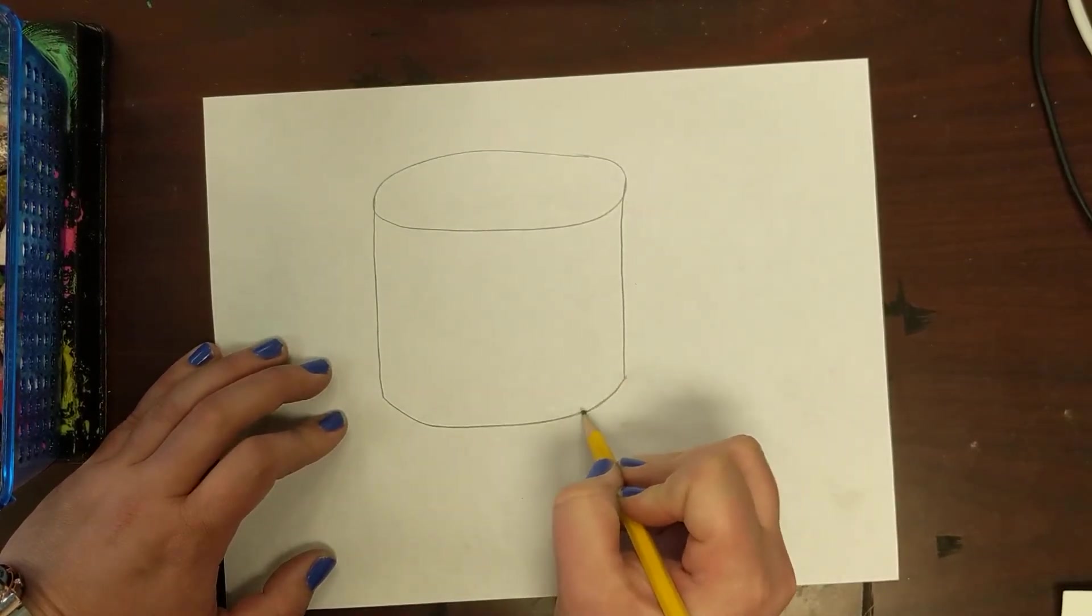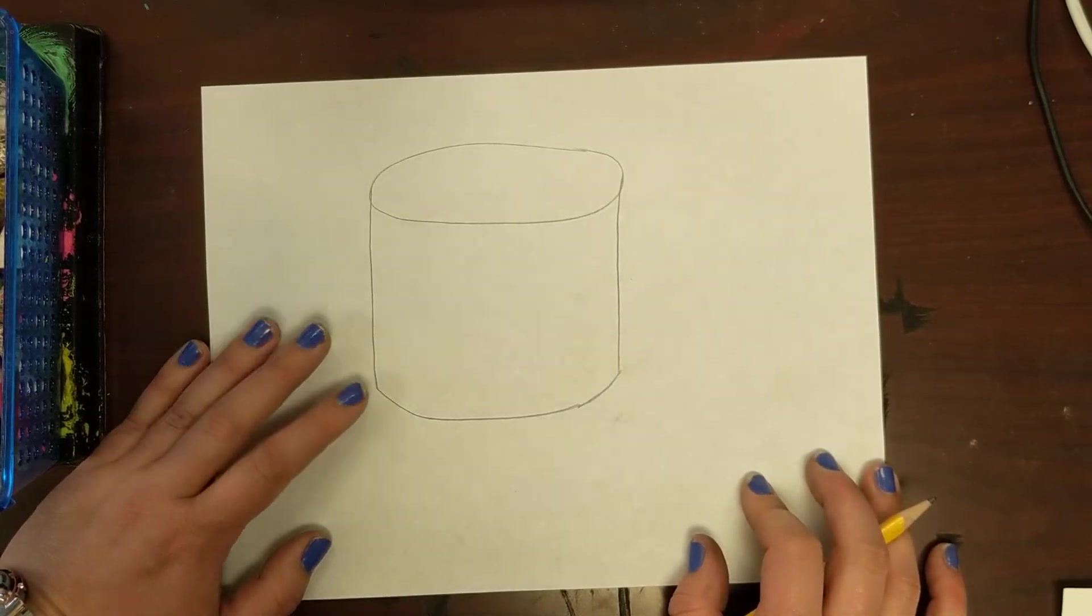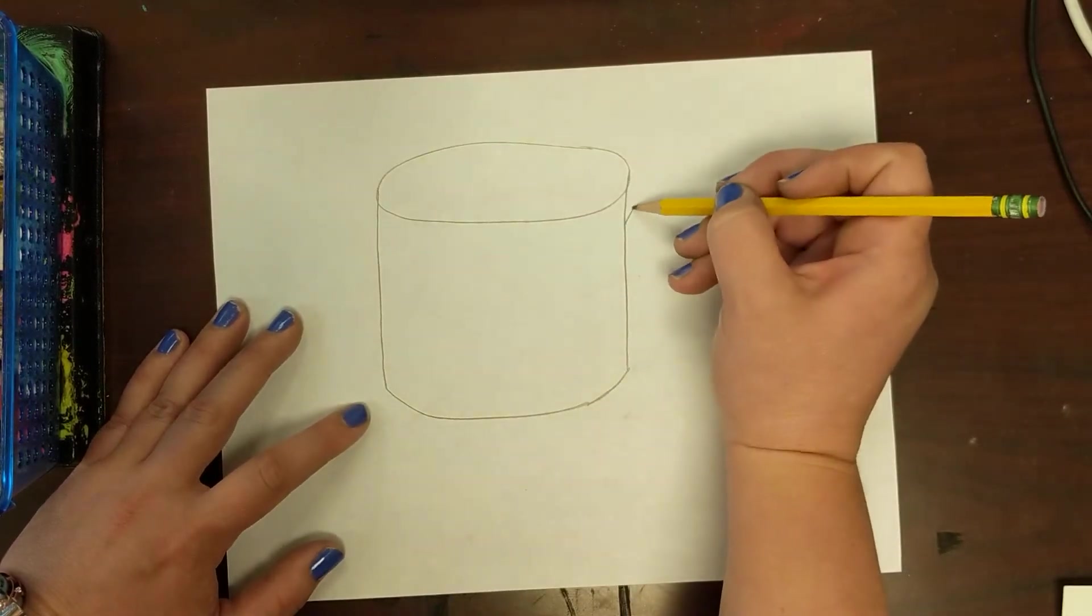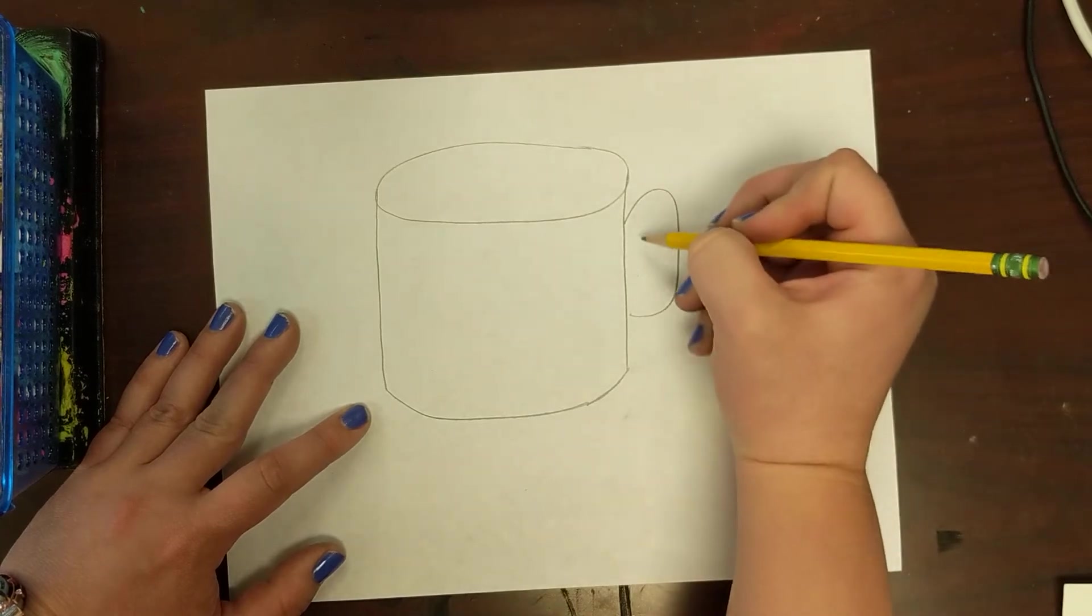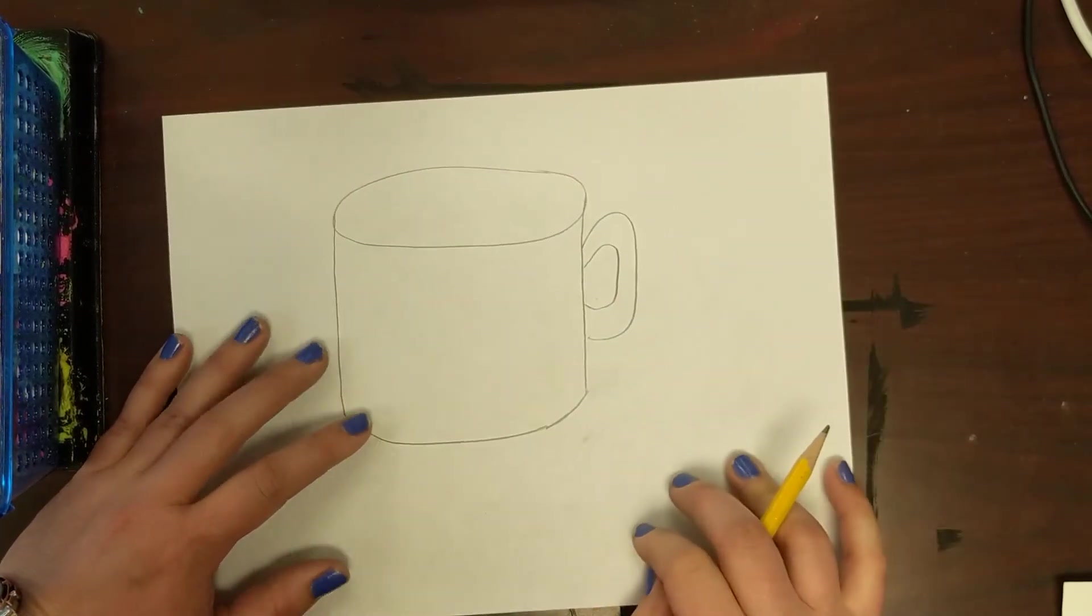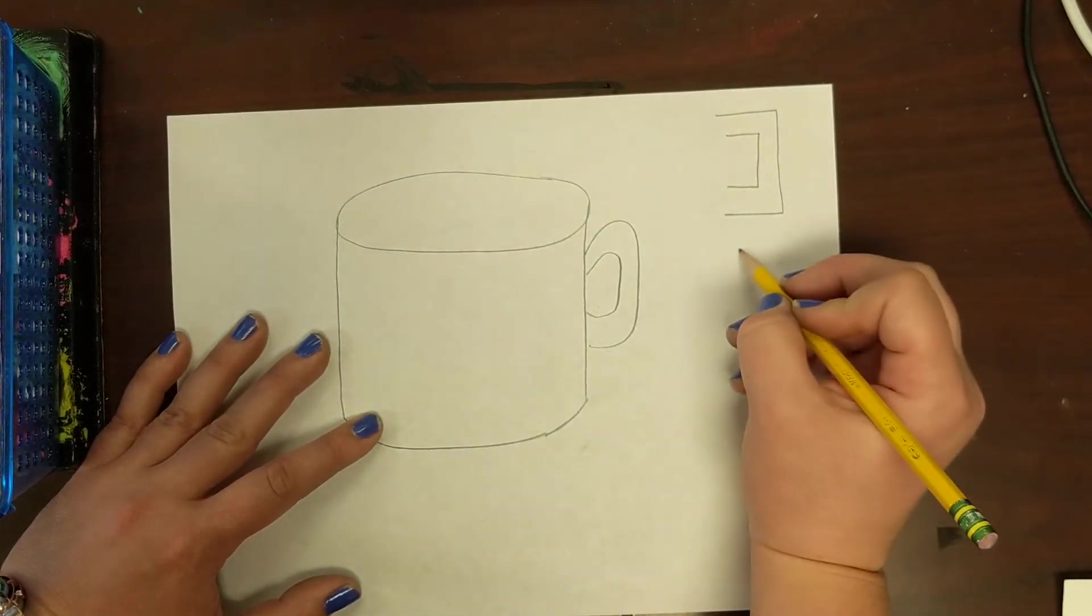It kind of looks like a big giant marshmallow right now. Now I'm going to add my handle. I'm just gonna do this kind of handle, so I just do one shape and then right inside there I'm gonna do another that same shape. You guys can make any kind of handle you want. If you want to do like a square handle, if you want to do something fancy, you can do whatever you want.